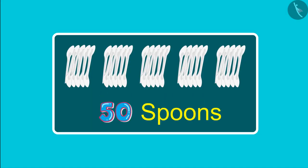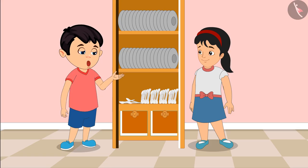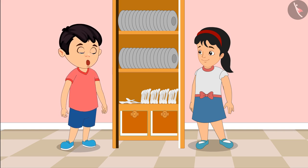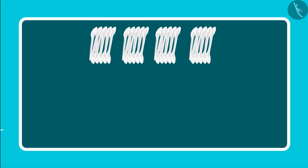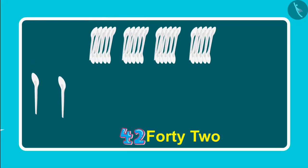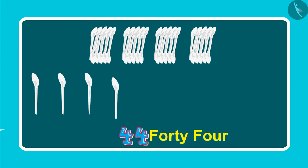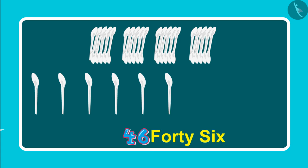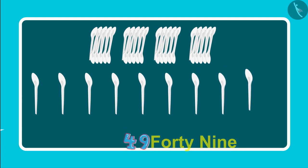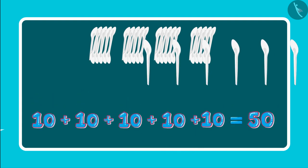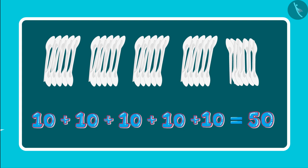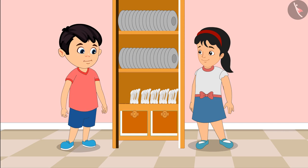We need a total of 50 spoons. So, it means we need 5 groups of 10 spoons each. Right now, we have 4 groups. So, this means we need 1 more group of 10. Come on, Chotu, let us count the spoons. So, these are 41, 42, 43, 44, 45, 46, 47, 48, 49, 50. So, these are 5 groups of 10 each, which means 50 spoons. Pinky, now let us go and give the spoons to mother.